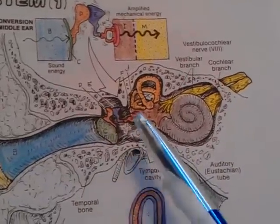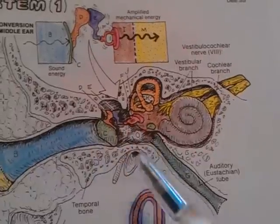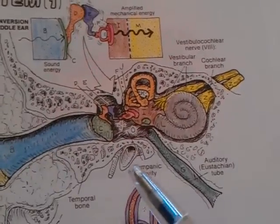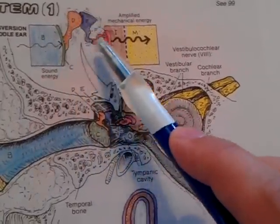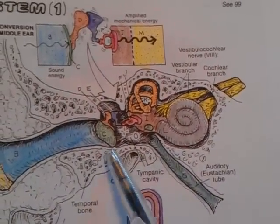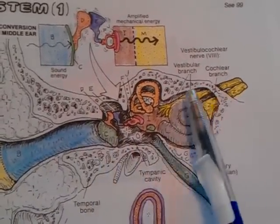The tympanic cavity is lined by mucous membrane and filled with air. It contains a chain of movable bones, auditory ossicles, which transmit the vibrations of the tympanic membrane into the inner ear.